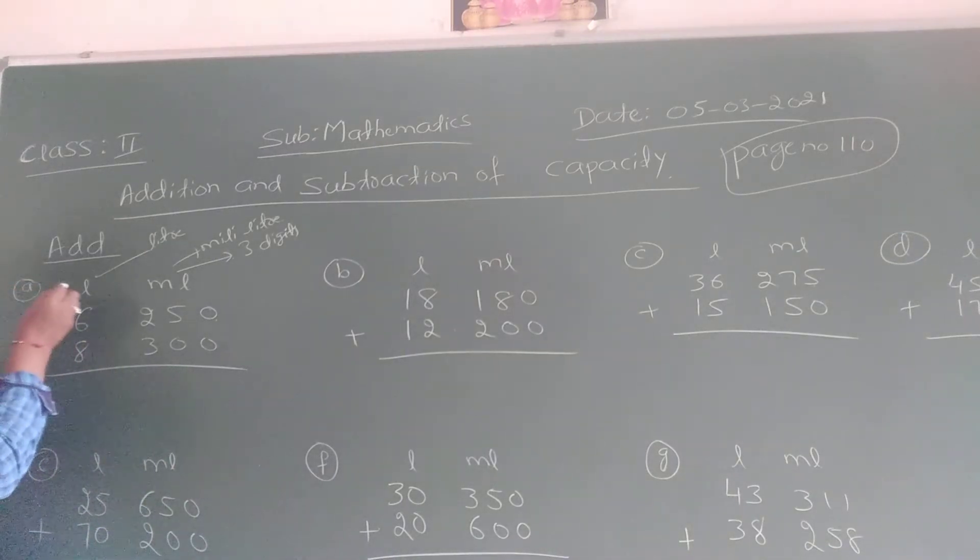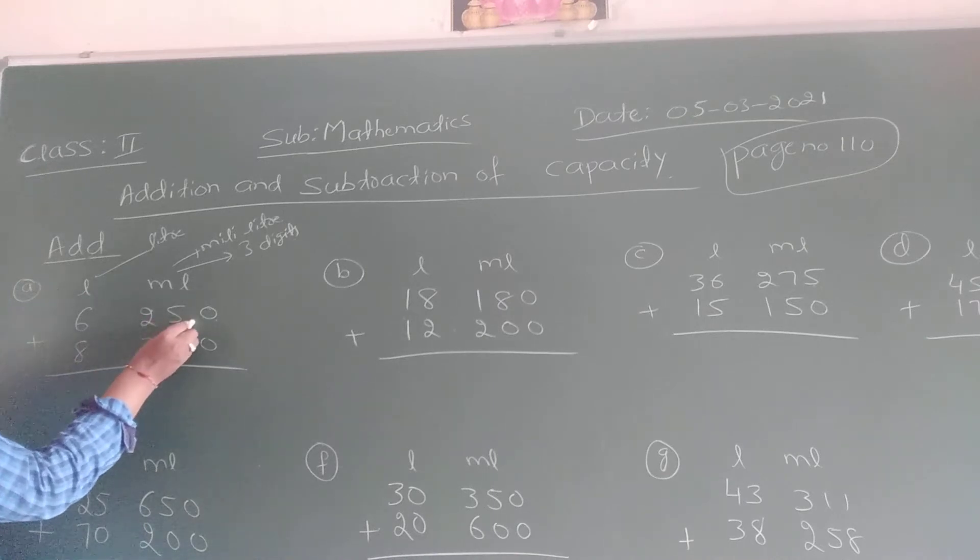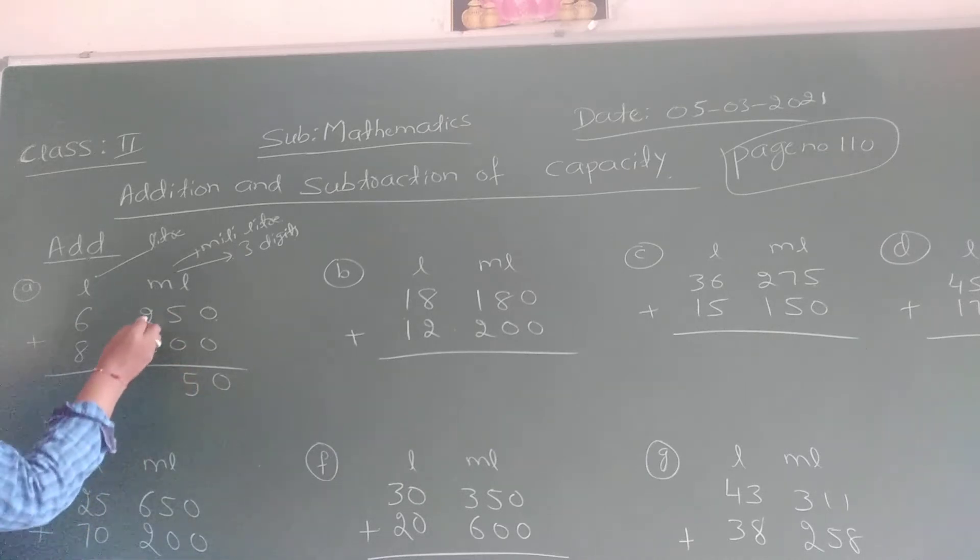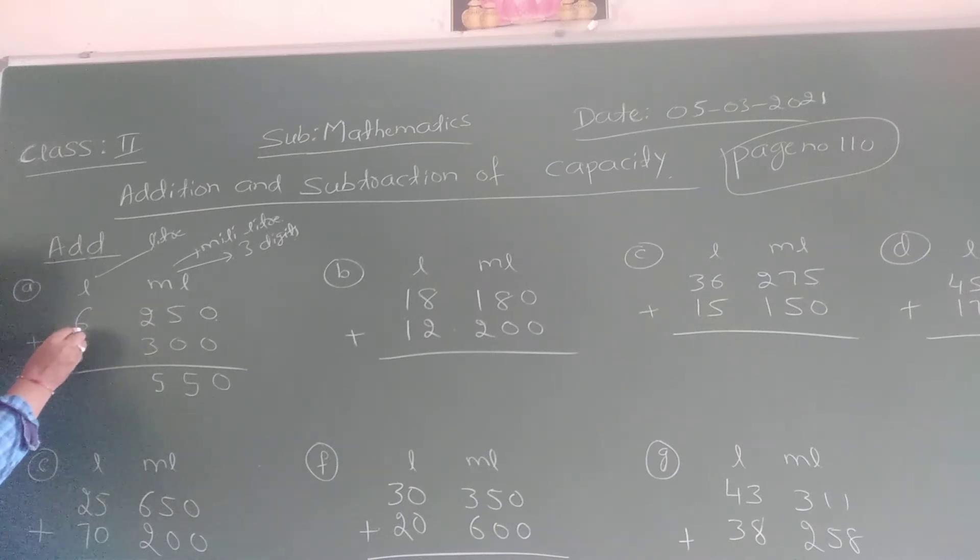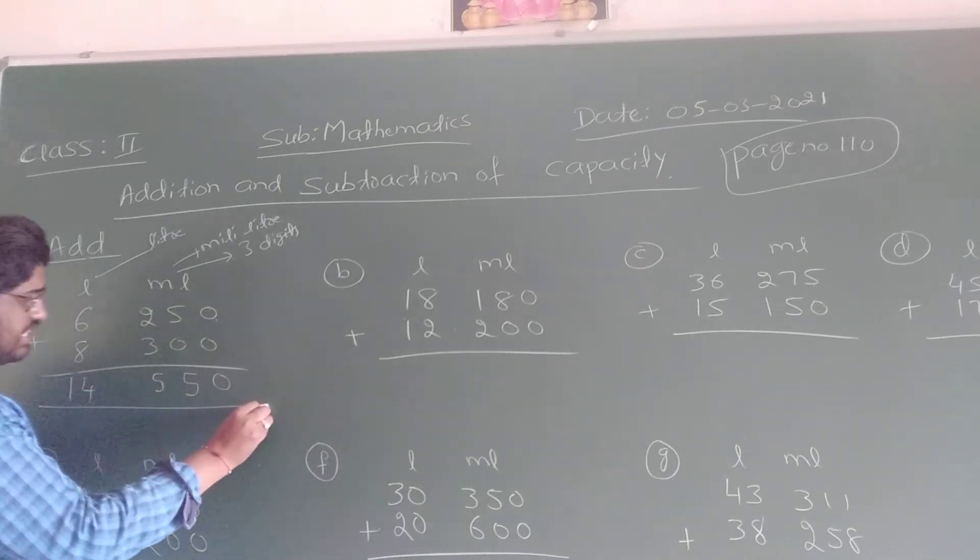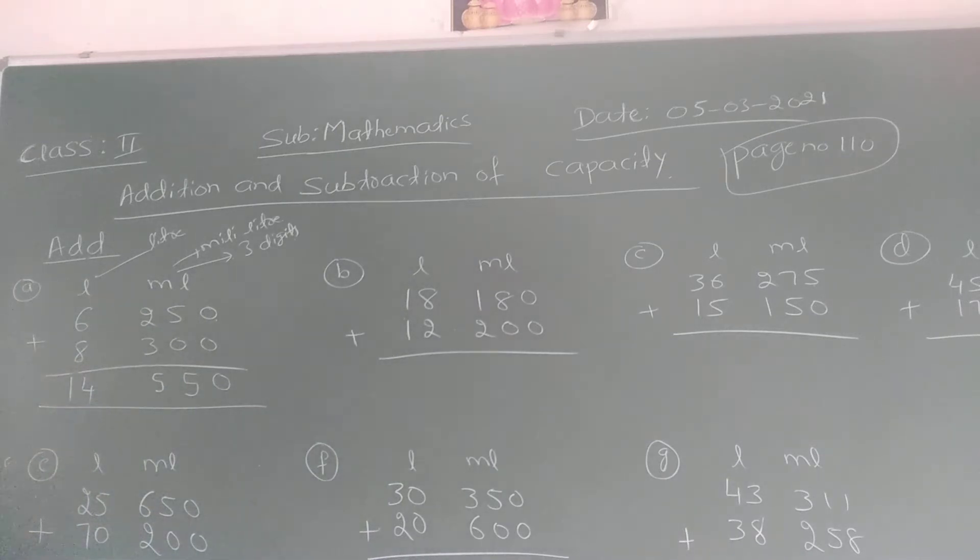Now so the first sum is here. Add 6 liter 250 ml plus 8 liter 300 ml. We are going to add. So children 0 plus 0 is how much? 0. 5 plus 0 is 5. 2 plus 3 is 5. Right here 5. Now 6 plus 8. 6 in your mind, 8 in your hand. After 6 you have to count 8 fingers. How much it is? Yes. It is 14. So the answer is here 14 liter 550 ml. Okay. Understand it here. This is the completion of first sum.